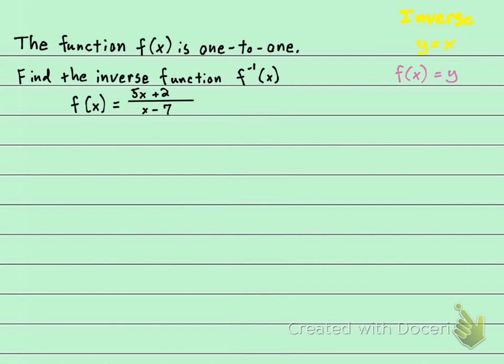So let me rewrite this here. Instead of f of x equals, we know that we can write y equals, and that's going to be 5x plus 2 over x minus 7.